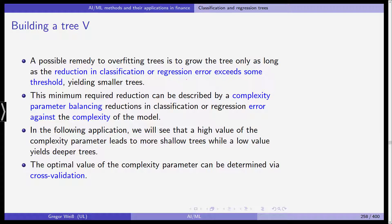A high value of the complexity parameter leads to more shallow trees, while a low value yields deeper trees. Without controlling for overfitting, models will not generalize well to new data. The optimal value of the complexity parameter — a hyperparameter — is determined via cross-validation.